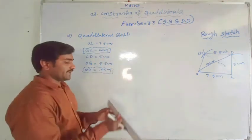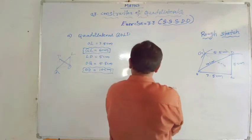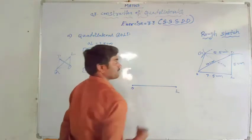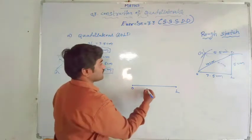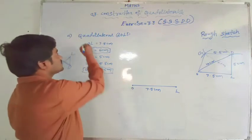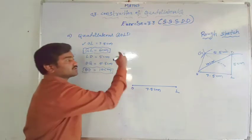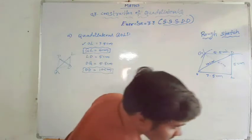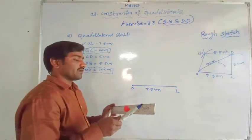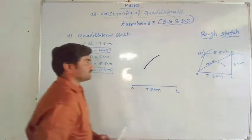Now let us construct the fair sketch of this diagram step by step. First, take a ruler and compass, and draw OL equal to 7.5 cm as the base - this is O and this is L. Next, GL equal to 6 cm: L is present, so we can locate G. Since GL is a diagonal, G will come somewhere on an arc. Take a 6 cm radius exactly on the compass and keep it at L, then draw an arc.